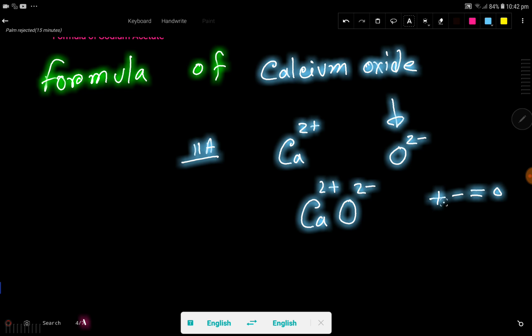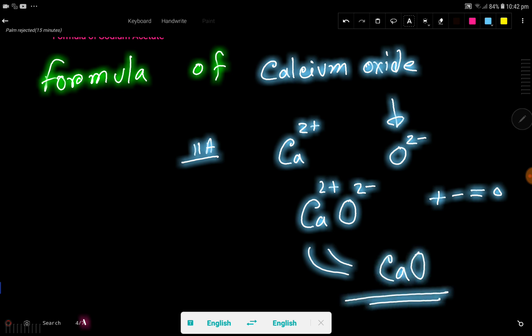So this 2+ will cancel two negative charges. Overall we are getting calcium oxide. So this is the formula of calcium oxide. I hope you have understood this formula of calcium oxide. Thank you for watching this video.